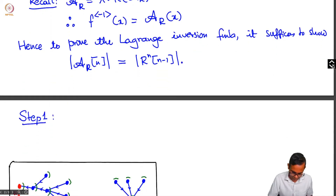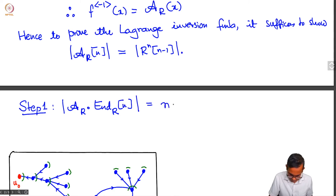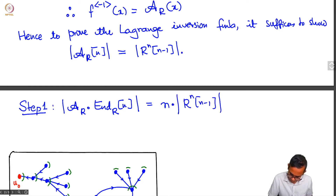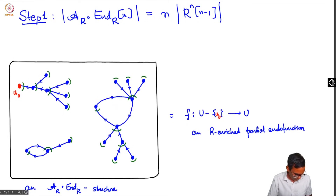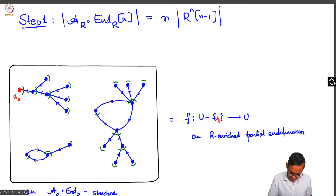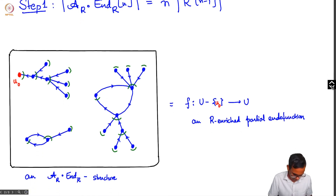The first step: I will show that |A_R · N_R|[n] equals n times |R^n|[n−1]. This is just multiplication of integers. I will give a visual proof. The number of A_R · EndR structures on a set of size n: here is an example of an A_R · EndR structure on a set.